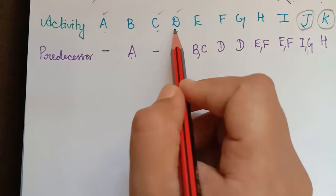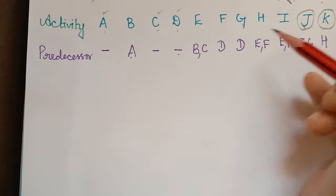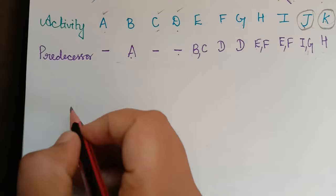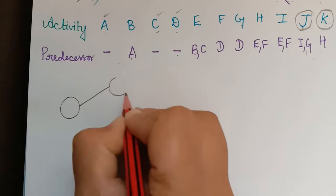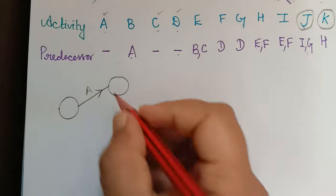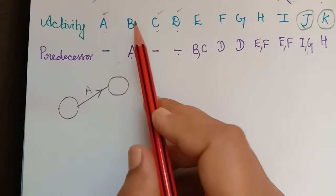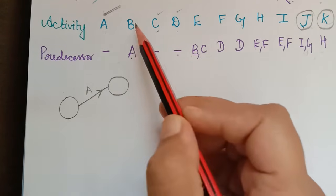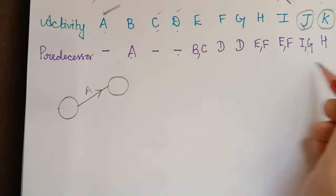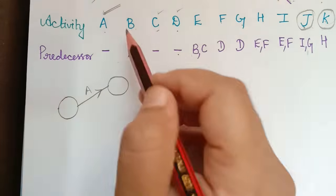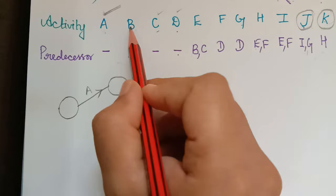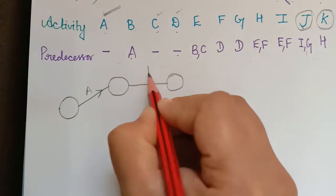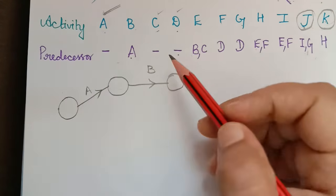We begin drawing the network. Starting with activity A, which has no predecessor. Next is activity B, for which A is the predecessor. So from the end node of A, we draw activity B. We will first draw a rough diagram and then make a fair copy.